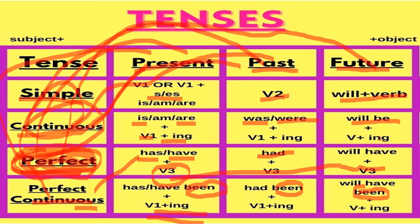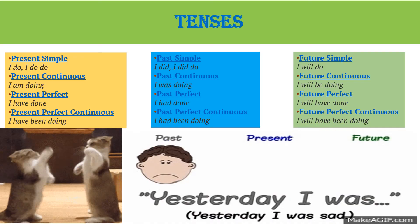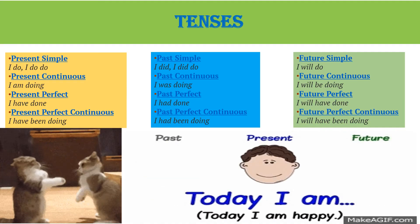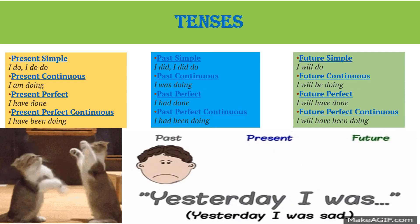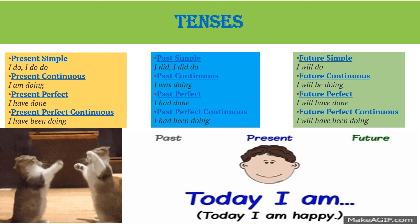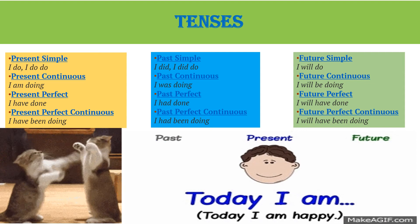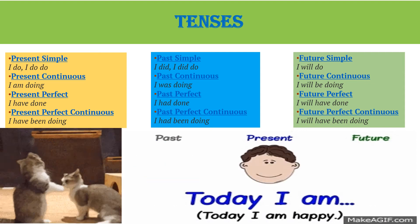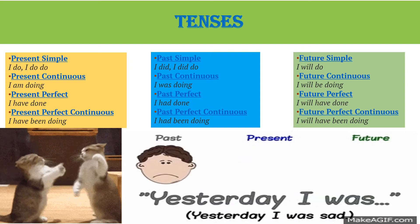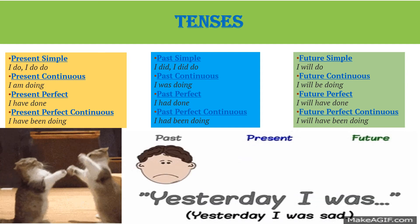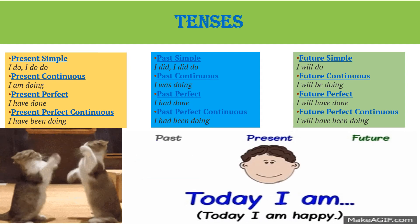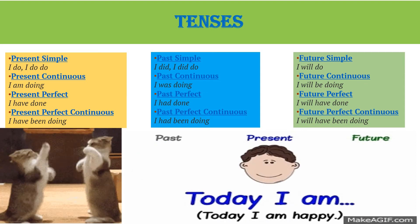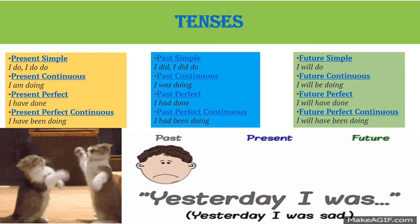Now let's see a few more examples. What are these two cats doing? These two cats are fighting — 'are fighting' is present continuous tense. If they were fighting yesterday, then I will say 'they were fighting.' They will be fighting — that will be the future tense.